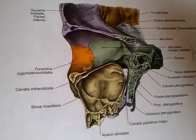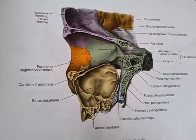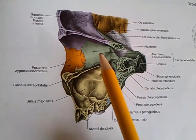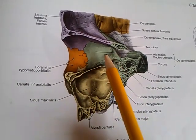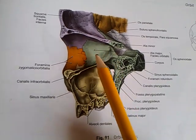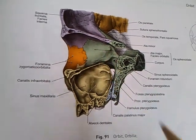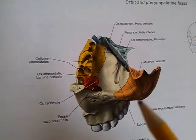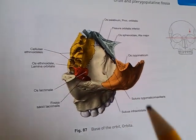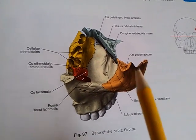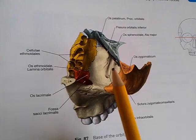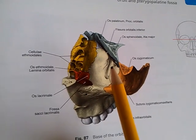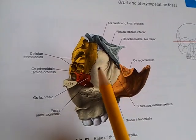Next you have the lateral wall — this is the zygomatic bone and the sphenoid bone, the greater wing orbital surface. And lastly we have the inferior wall; now we're looking down into the orbit. The inferior wall is made up of the zygomatic bone and the maxilla, orbital surface of the body.